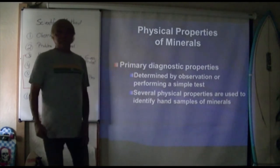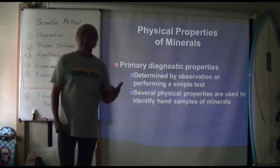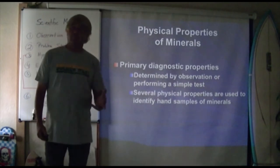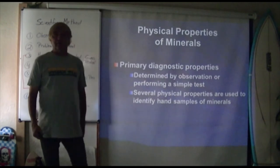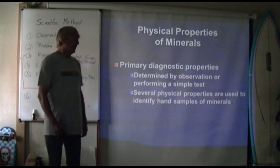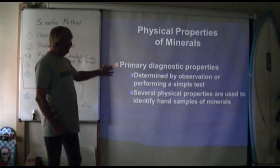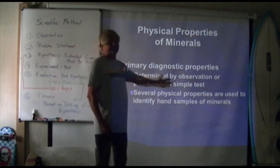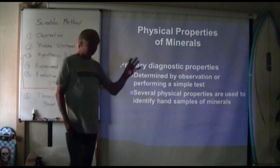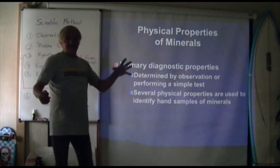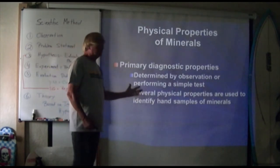To identify minerals we look at a bunch of properties: is it hard or soft, what color is it, what's the crystal form, how much does it weigh, does it leave a mark on a streak plate, does it react to acid? There are all sorts of diagnostic properties we use. Like in the scientific method, we start with observation. We make a hypothesis — I think this is graphite or galena — and then we look at the physical properties as our experiment. Once that experiment is done we evaluate our conclusion.